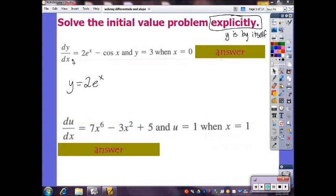So down here we have dy over dx equals 2 times e to the x minus cosine of x, and y equals 3 when x equals 0. And basically what they want you to do is find the particular solution given this initial value.